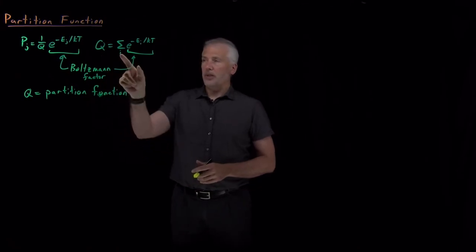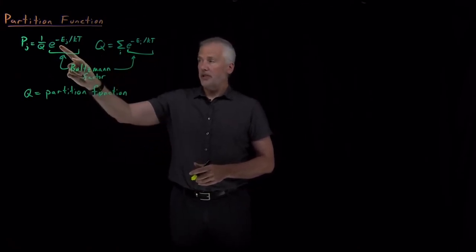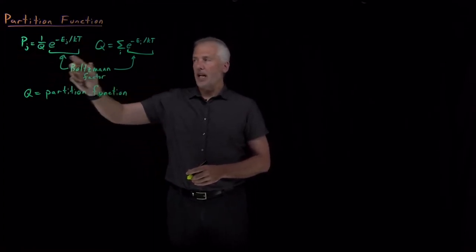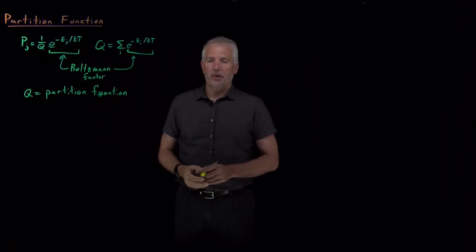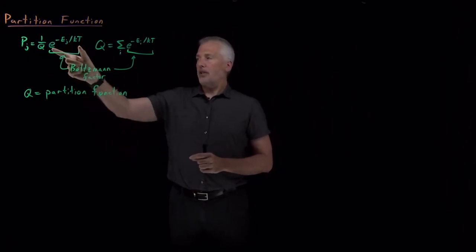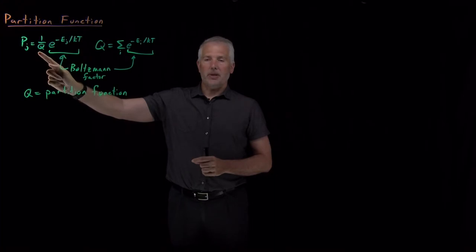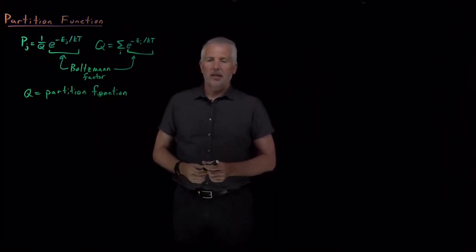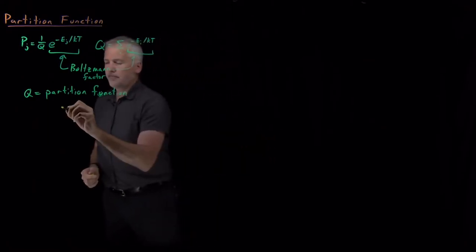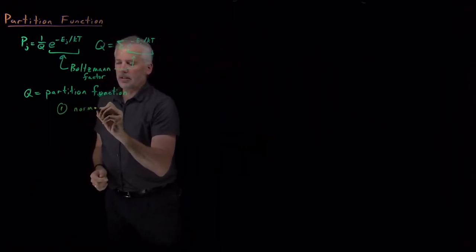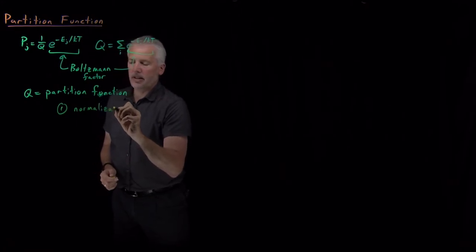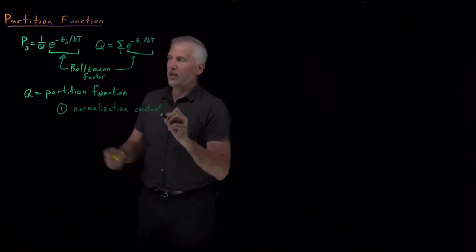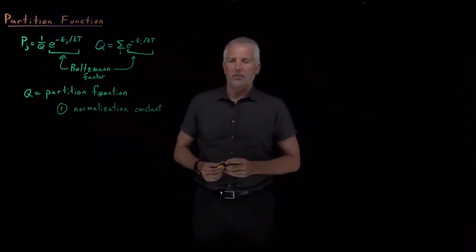The reason q has to be the sum of all of the Boltzmann factors is that if I take this Boltzmann factor divided by the sum of all of them to calculate the probability, that ensures that when I add up all the probabilities — for state 1, 2, 3, and 4 — the sum in the numerator will cancel the sum in the denominator and the probabilities will sum to 1. So in that sense, the partition function is just a normalization constant, and that's not terribly exciting or interesting.